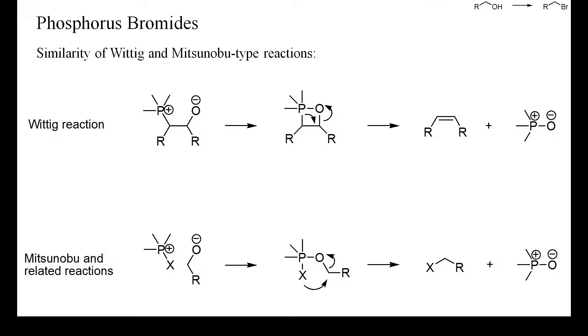In both reactions, an alcohol adds to a tetravalent phosphonium salt to yield a pentavalent alkoxyphosphorus derivative. This intermediate decomposes irreversibly to the observed products, an olefin in the case of the Wittig reaction and a substitution product in the case of the Mitsunobu reaction or phosphorus-mediated deoxyhalogenations.